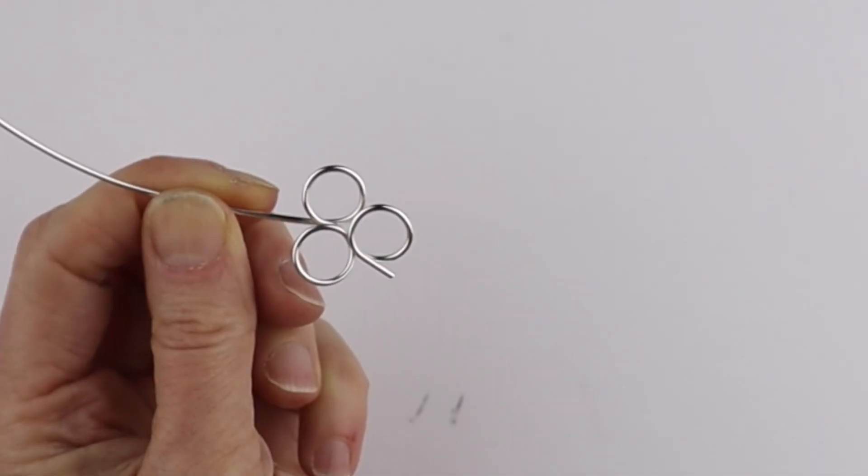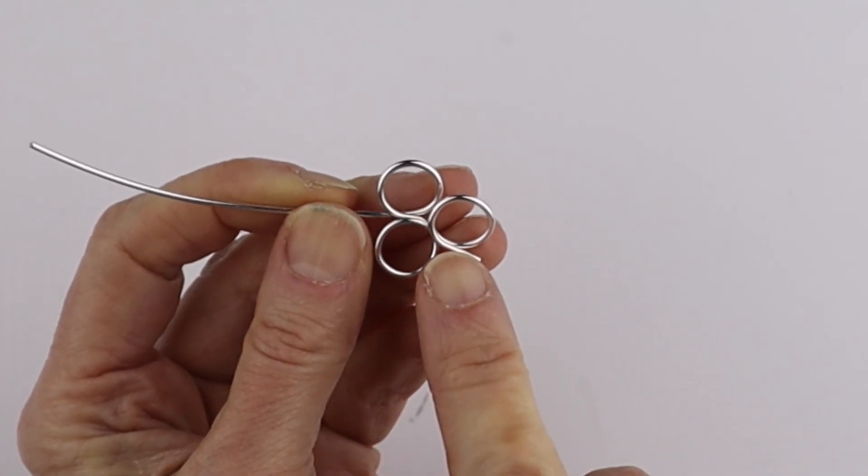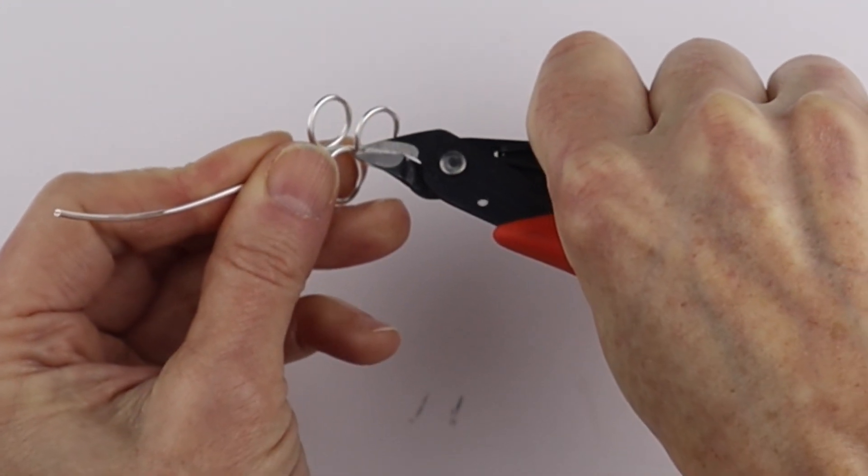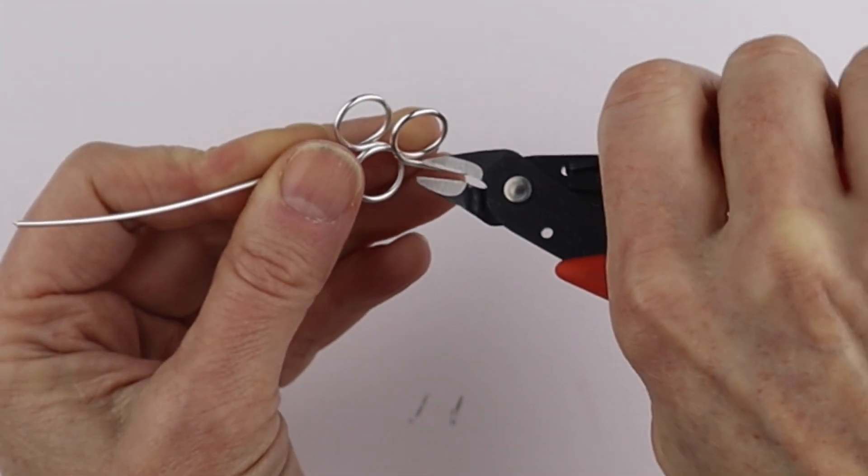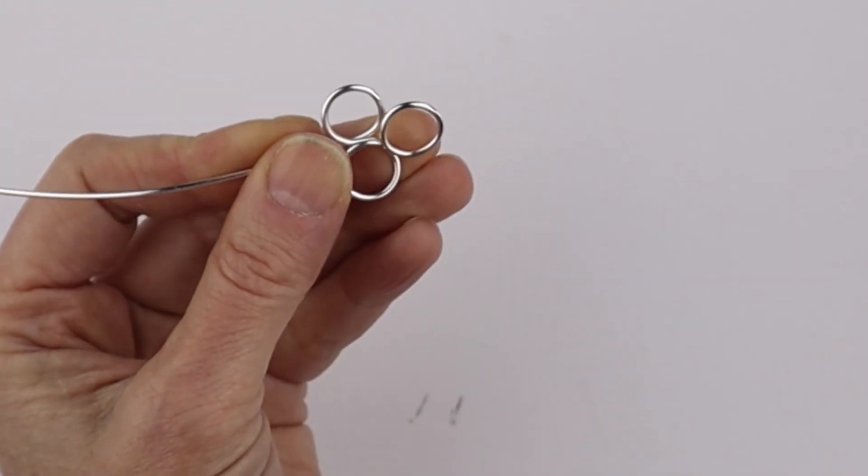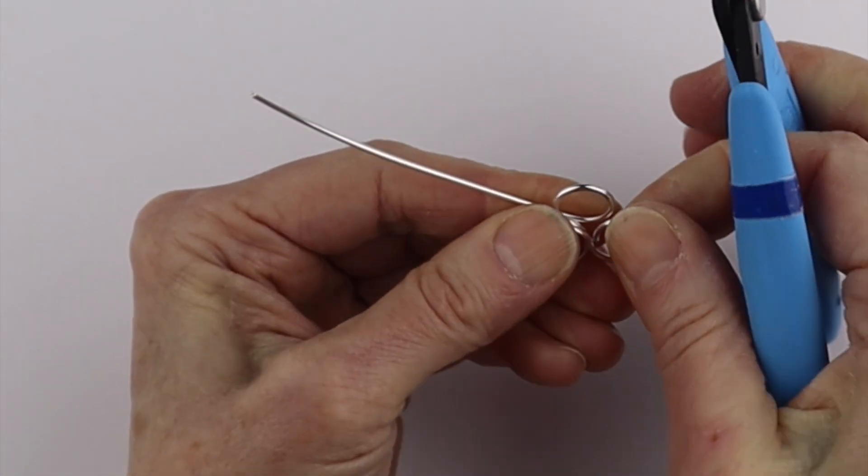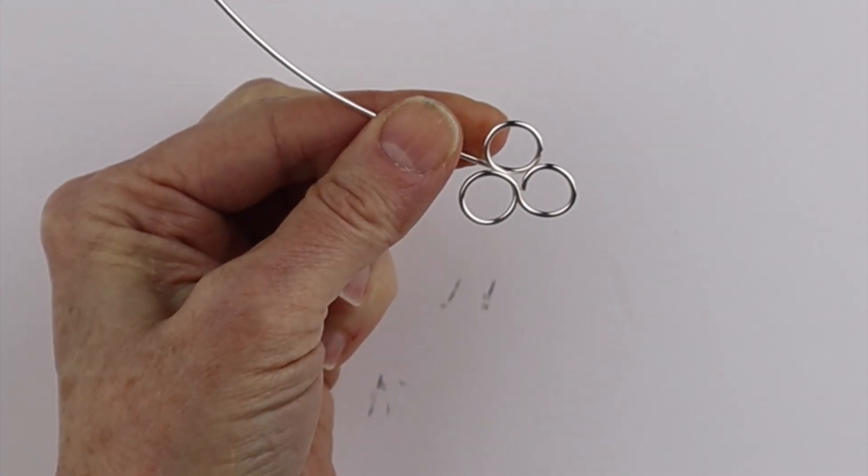This one's going to go out to the side and then we want to clip that one here. So we're just going to give it a little bit of a clip, so it's flush. Remove it and just push it down so it's in there.